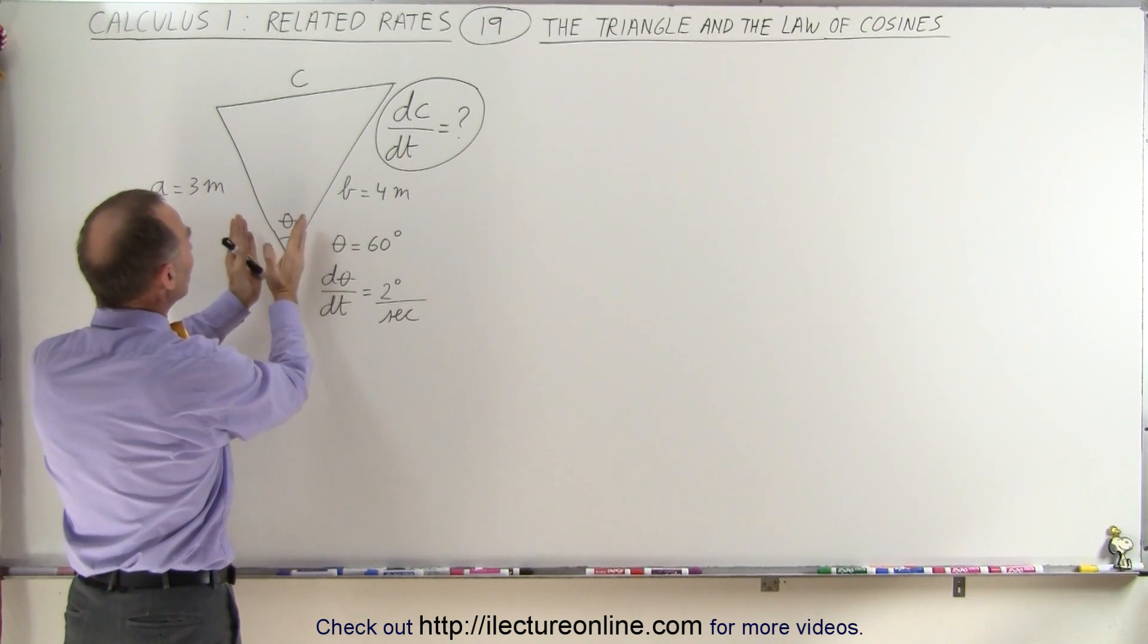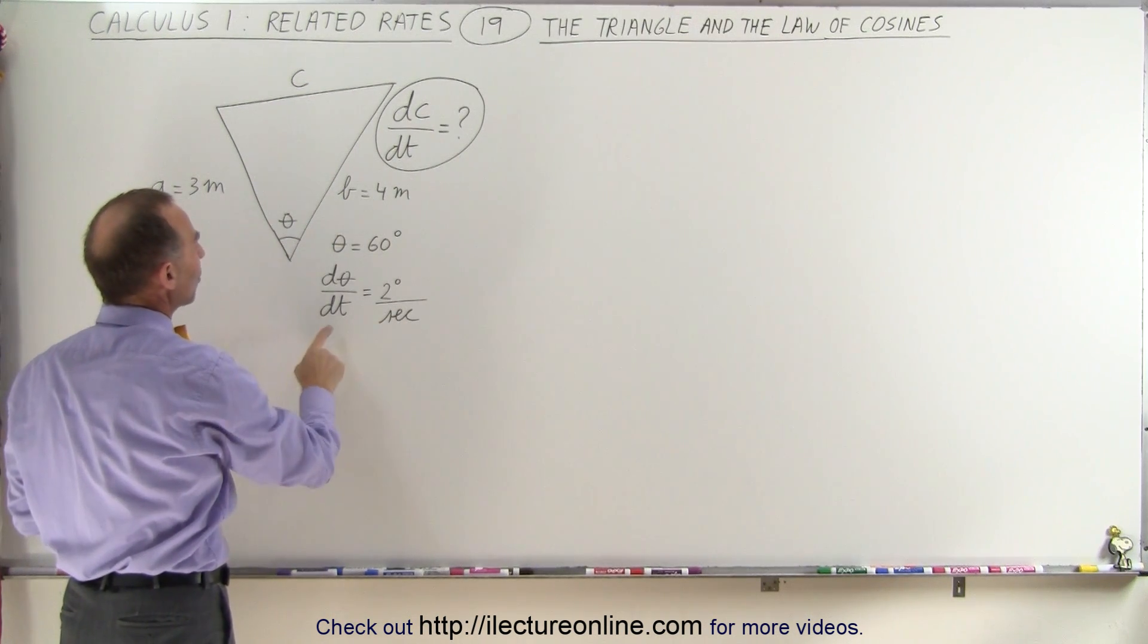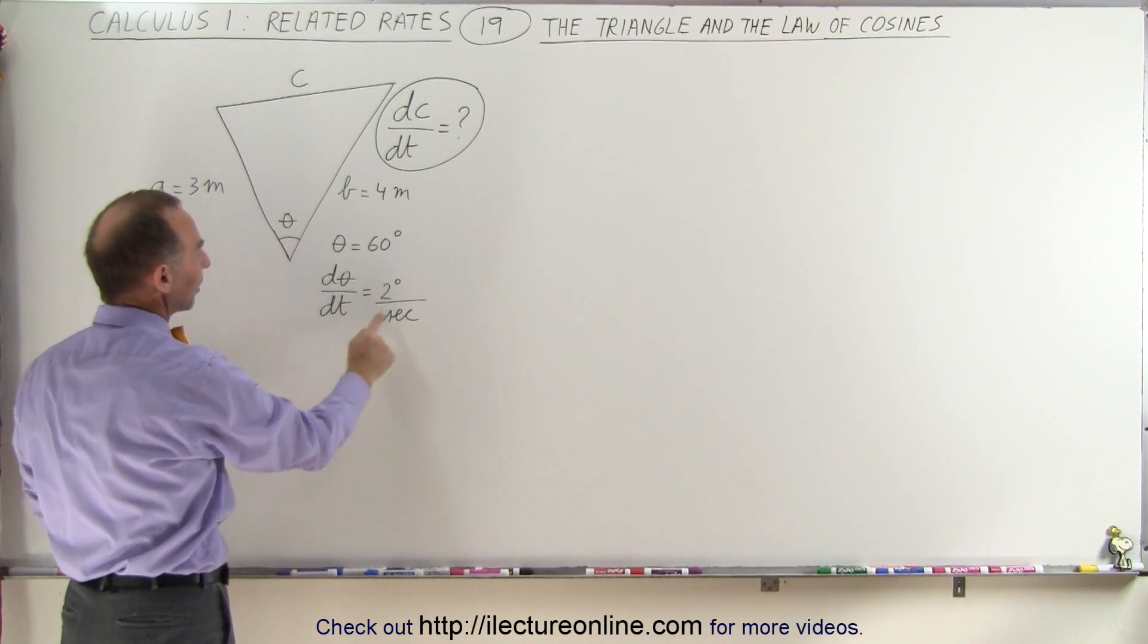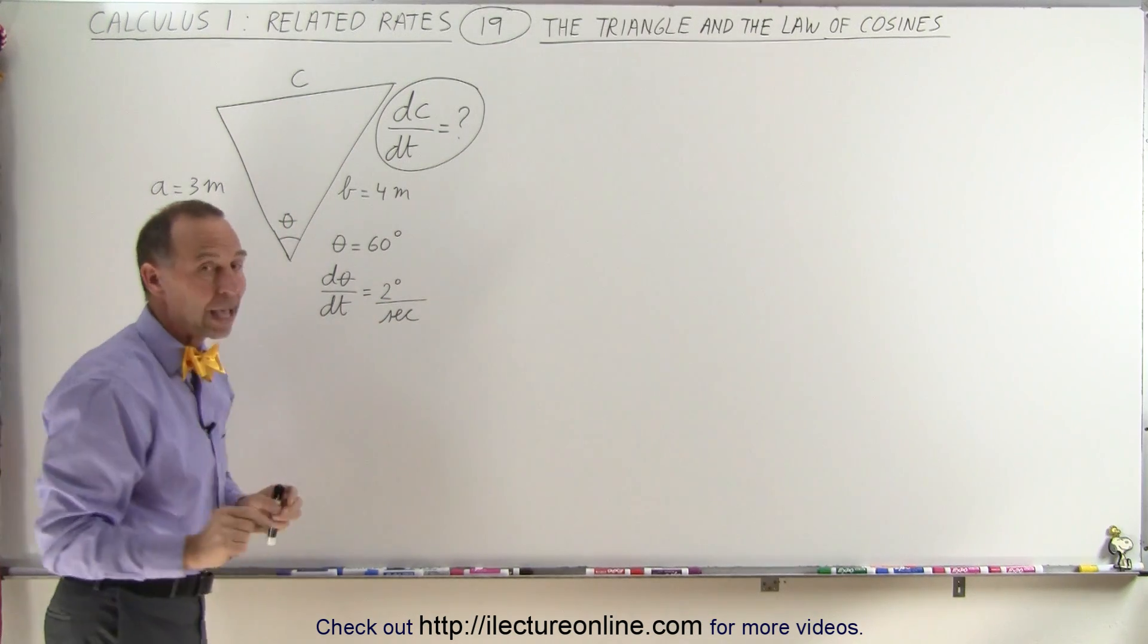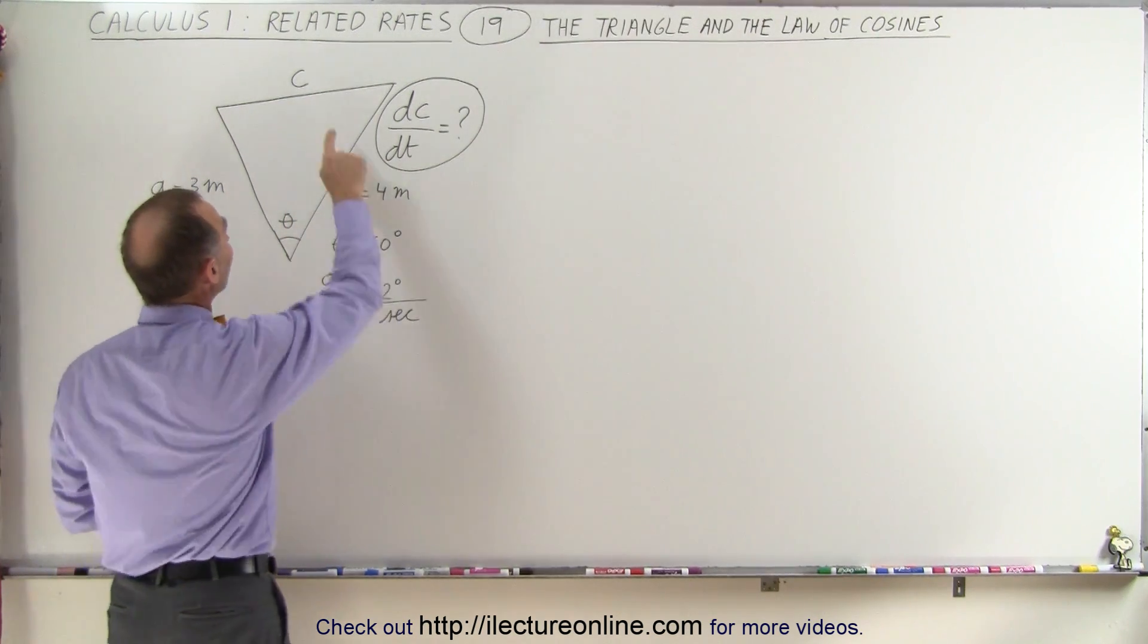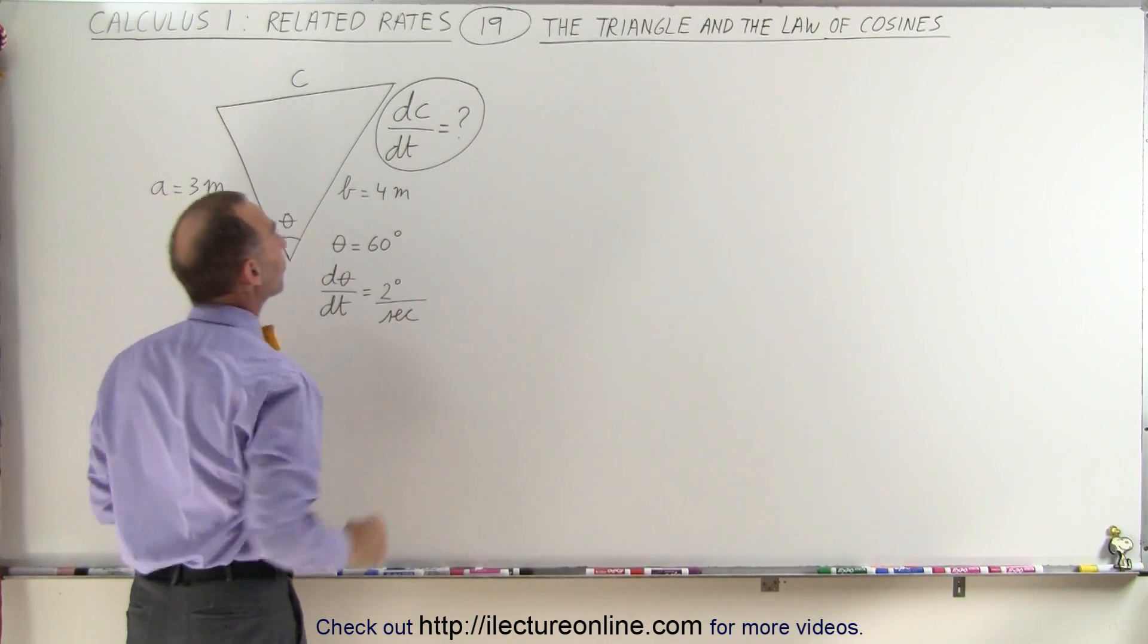We're given that the angle between A and B is 60 degrees, and the angle is increasing at a rate of 2 degrees per second. We're trying to find the rate at which the length of C is changing per unit time.